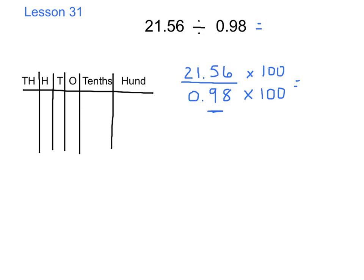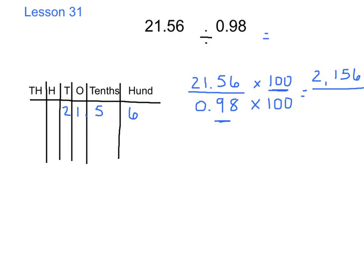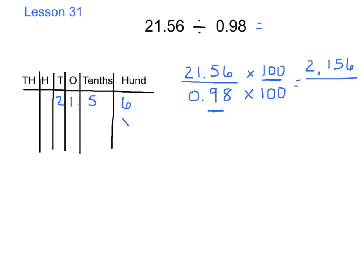21 and 56 hundredths times 100 equals 2,156. If you forgot how to do this, we'll use our place value chart. I'll put 21 and 56 hundredths in the chart, and because I'm multiplying by 100, I shift my numbers two places to the left. The 6 goes in the ones place, 5 in the tens place, 1 in the hundreds place, and 2 in the thousands place — giving us 2,156, which matches my numerator.